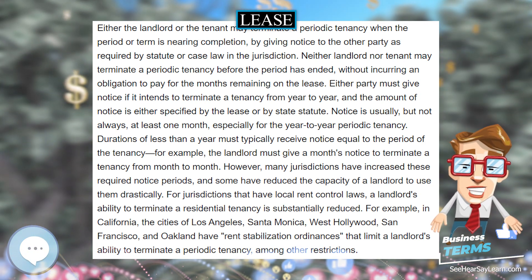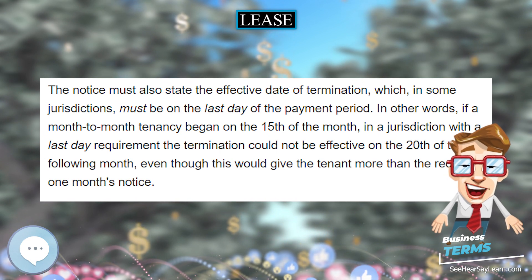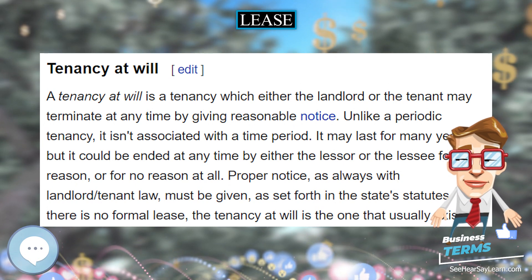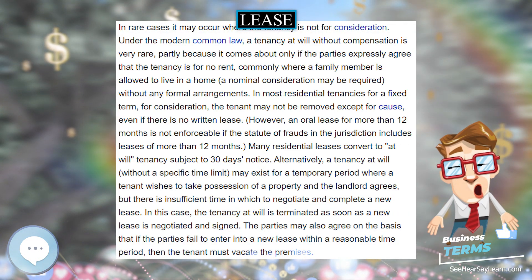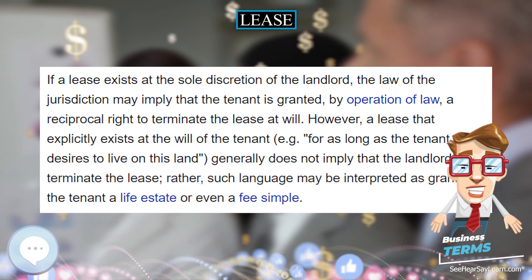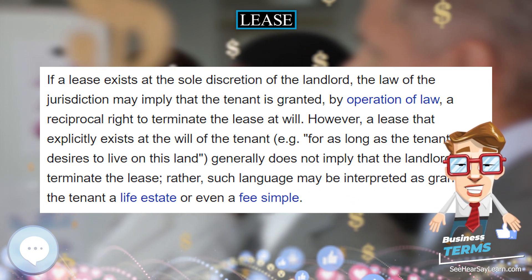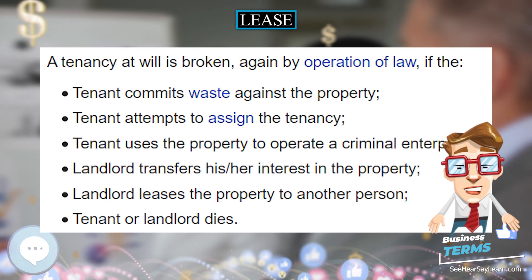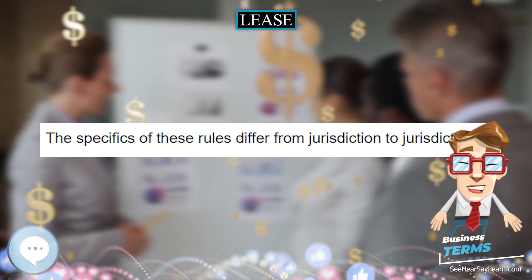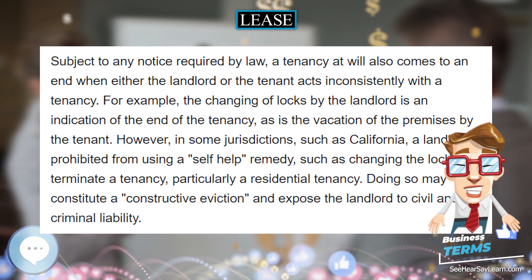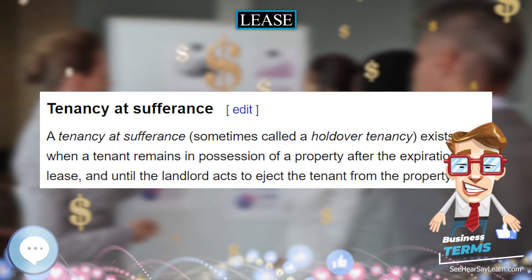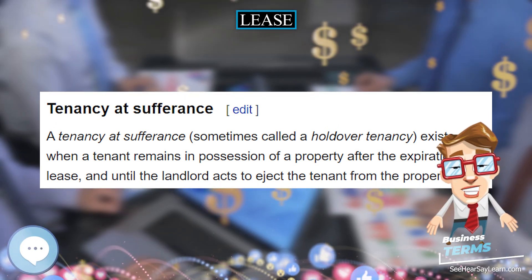Under the modern common law, a tenancy at will without compensation is very rare, partly because it comes about only if the parties expressly agree that the tenancy is for no rent. Commonly where a family member is allowed to live in a home, a nominal consideration may be required, without any formal arrangements. In most residential tenancies for a fixed term, for consideration, the tenant may not be removed except for cause, even if there is no written lease. However, an oral lease for more than 12 months is not enforceable if the statute of frauds in the jurisdiction includes leases of more than 12 months. Many residential leases convert to at-will tenancy subject to 30 days' notice.